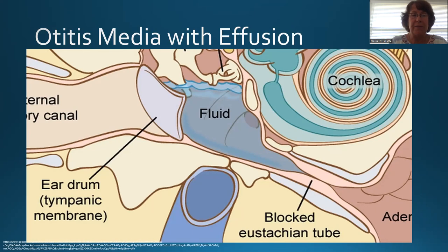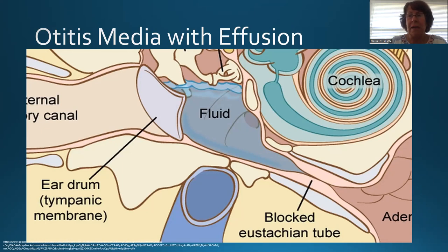Sometimes fluid can remain after the infection is gone. The longer it stays, the thicker it becomes. Fluid there for about a week is very thin and causes minimal problems — sometimes a little muffled hearing. If it remains two to four weeks, it tends to become thicker and a mild hearing loss can become moderate. Fluid there for longer periods becomes very thick — sometimes the consistency of glue — and can't drain out the already-swollen eustachian tube. Those three bones designed for an air-filled space can't vibrate properly when fluid fills it, causing hearing loss.